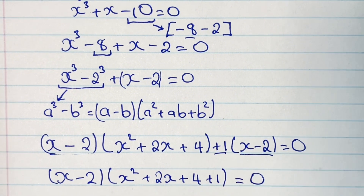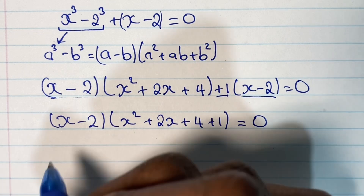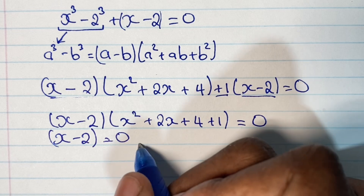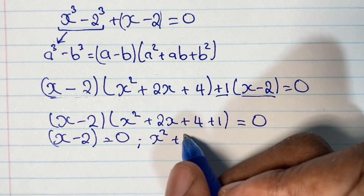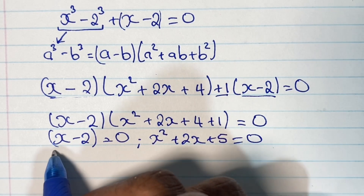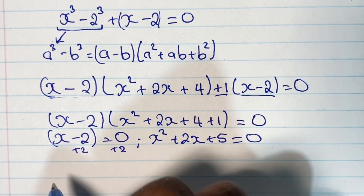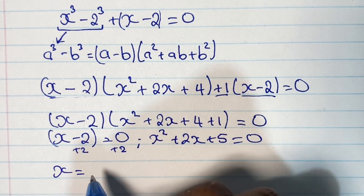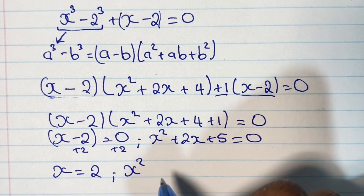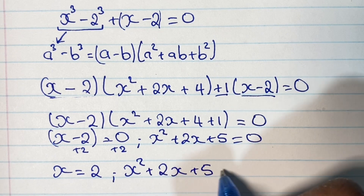Using the zero product property, if two factors multiply to give 0, then either one or both equal 0. So we have x minus 2 equals 0, or x squared plus 2x plus 5 equals 0. Solving the first equation by adding 2 to both sides gives us x equals 2.